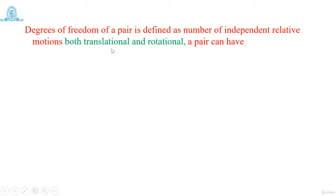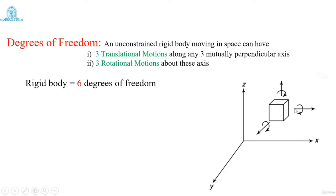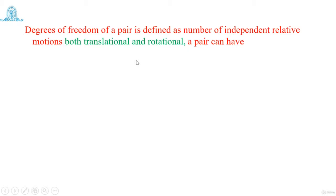So degrees of freedom of a pair is the number of independent relative motions — both translation and rotational — a pair can have. Independent means it does not depend on any other motion. Maximum is six in the case of a rigid body in space with three mutually perpendicular axes. For a pair, it is once again those independent relative motions — both translation and rotational.